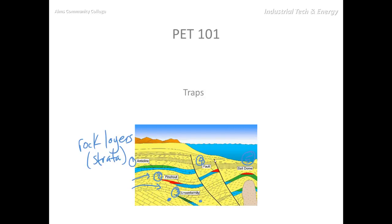In a fault trap, we have a fault line — a couple of fault lines here. And we had some discontinuity with strata densities, so we have an opportunity for an accumulation right at this fault line.